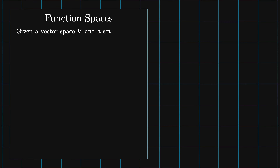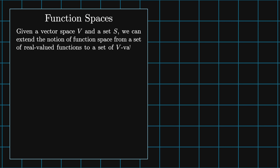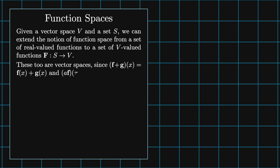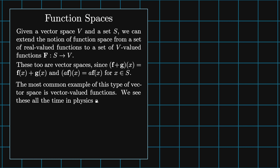Given a vector space v and a set s, we can extend the notion of function space from real valued functions to the set of v valued functions, where f is a map from the set s to the vector space v. These are vector spaces, since the axioms of vector spaces hold for them too. The most common example of this type of vector space is vector valued functions, which we see all the time in physics and engineering.